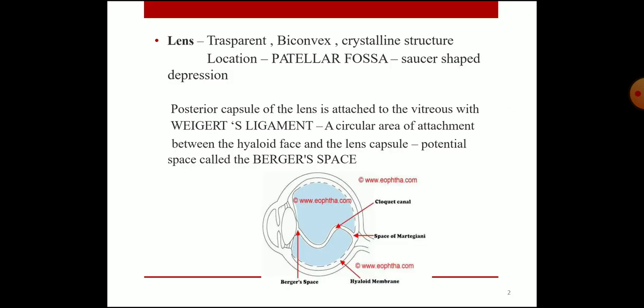The lens is a transparent biconvex crystalline structure. Its location is the patellar fossa, a saucer-shaped depression. The posterior capsule of the lens is attached to the vitreous with Wieger's ligament. A circular area of attachment between the hyaloid face and the lens capsule — a potential space — is called Berger's space, visible in the diagram at the posterior capsule attaching to the hyaloid face of the vitreous.